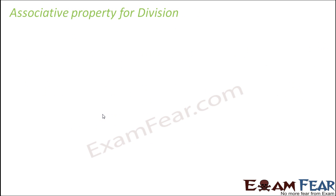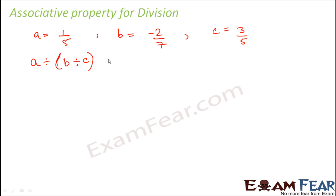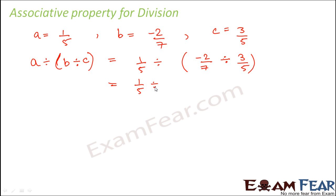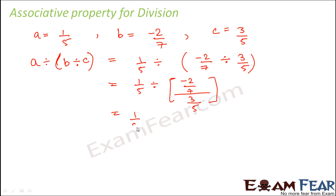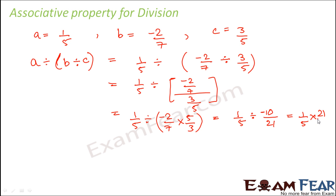For division, a = 1/5, b = -2/7, c = 3/5. We calculate a divided by (b divided by c), which is 1/5 divided by (-2/7 divided by 3/5). The inner bracket gives -2/7 into 5/3, which is -10/21. So we have 1/5 divided by -10/21, which equals 1/5 into 21/(-10), giving 21/(-50).